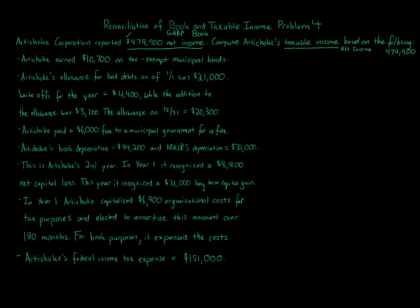All these items — the tax-exempt municipal bonds, bad debts, depreciation, the fine, the net capital loss, organizational costs, and federal income tax expense — all went into calculating the net income for books. So we need to say, how would that have been treated for tax purposes? And we make adjustments. The first item is municipal bonds — Artichoke earned $10,700 on tax-exempt municipal bonds.